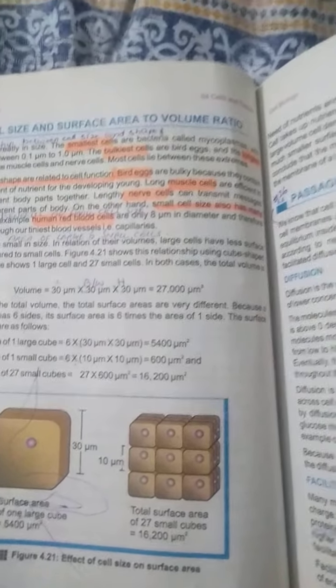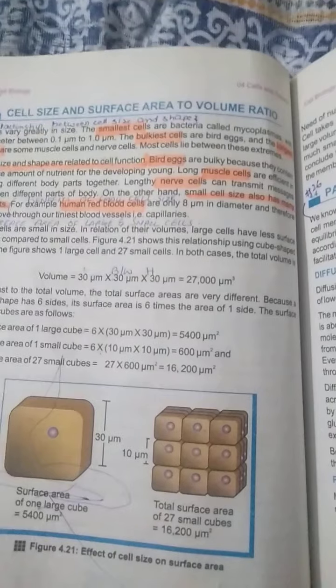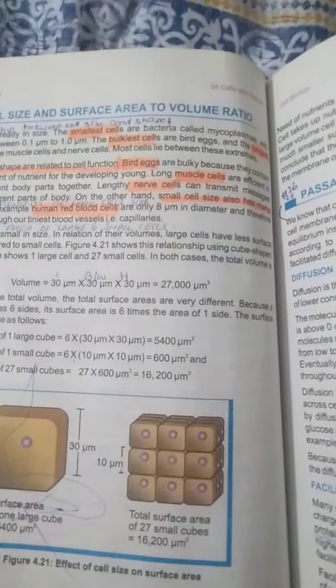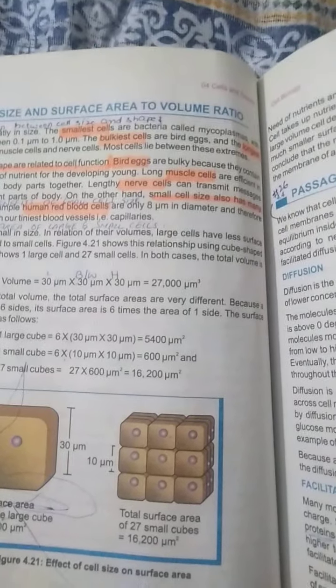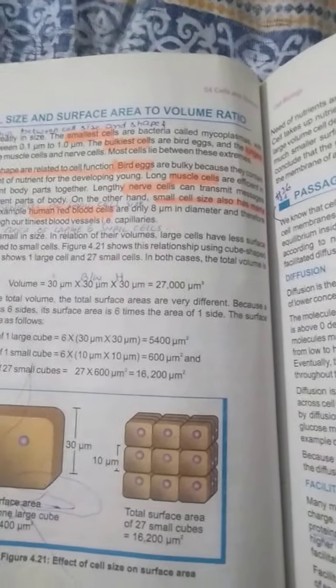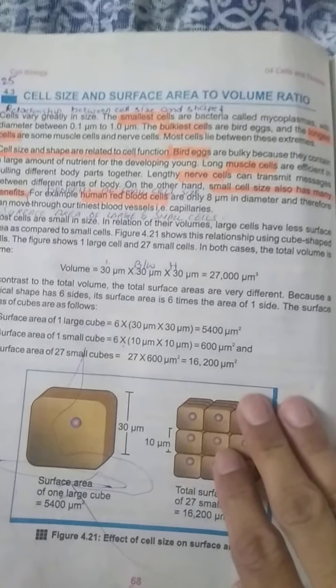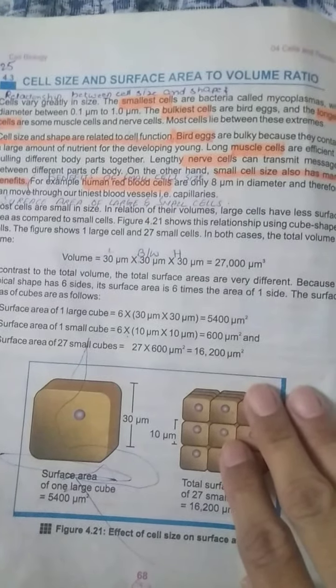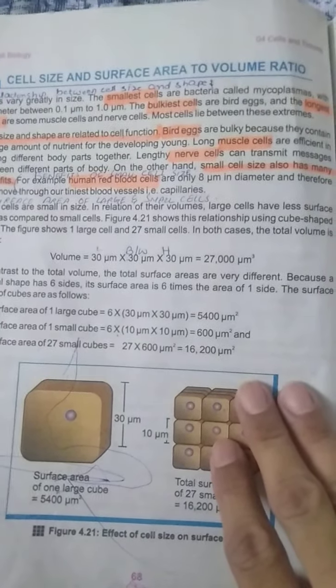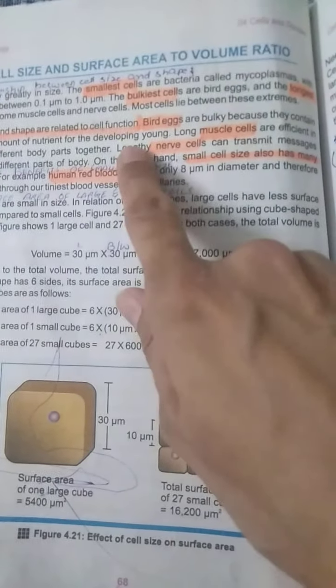Today we will study our topic cell size and surface area to volume ratio. It means we study the relationship between cell size and different surface areas of the cells. We study different types of relationships. First of all, we discuss the relationship between cell size and shape, how different types of cells and their different shapes vary and are related to their functions as well.